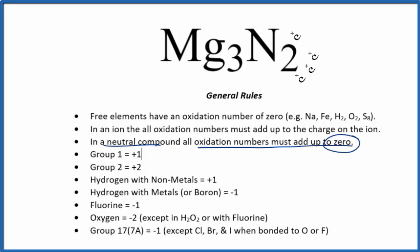The next thing we notice about this compound is that Mg, magnesium, is in group 2 on the periodic table. So each magnesium atom is going to have a +2 oxidation number. We have 3 of them, so 3 times +2, that's +6.